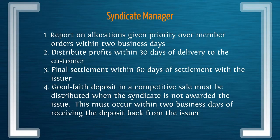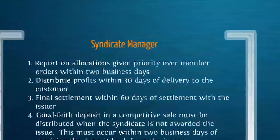The rules that are set apply to syndicate managers when making issuances of new Muni bonds. These include distributing profits within 30 days, final settlements within 60 days, reporting on allocations given priority over member orders within two business days, and a good-faith deposit in a competitive sale. You should know these rules, since they are key to Muni issuances.